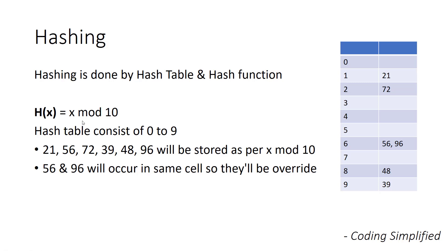So x mod 10 is the basic function. Let's start from 21: 21 mod 10 gives 1, so it stores at position 1 of the hash table. Next time 21 is searched, we know its location is index 1. For 56: 56 mod 10 goes to index 6. For 72: goes to index 2. For 39: index 9. For 40: index 0. For 96: 96 mod 10 also gives 6 — which is already filled by 56. So with a simple x mod 10, it would replace and overwrite 56, meaning 56 will be lost.